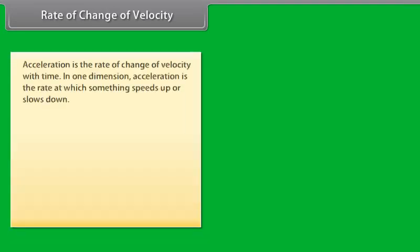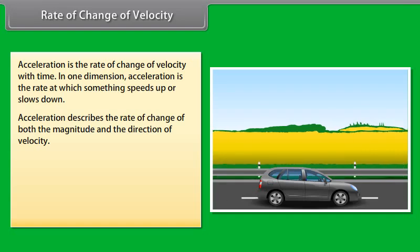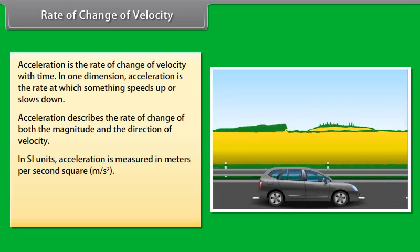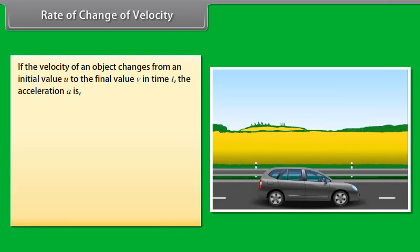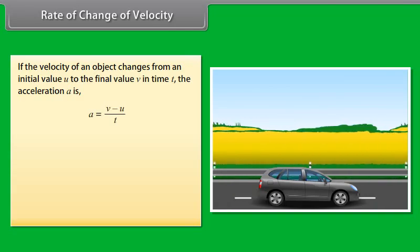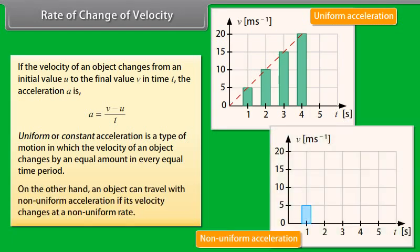Rate of change of velocity: Acceleration is the rate of change of velocity with time. In one dimension, acceleration is the rate at which something speeds up or slows down. Acceleration describes the rate of change of both the magnitude and the direction of velocity. In SI units, acceleration is measured in meters per second squared. Acceleration = change in velocity / time taken. If the velocity changes from initial value U to final value V in time T, then acceleration A = (V − U) / T. Uniform acceleration means velocity changes by an equal amount in every equal time period; non-uniform acceleration means velocity changes at a non-uniform rate.